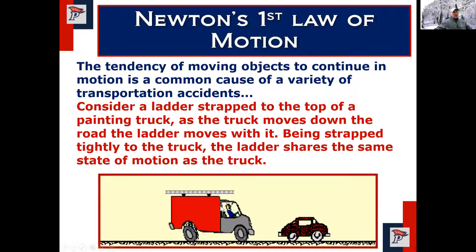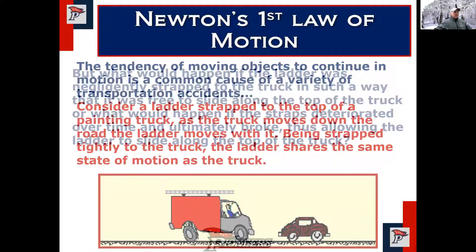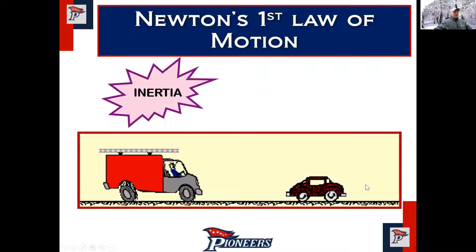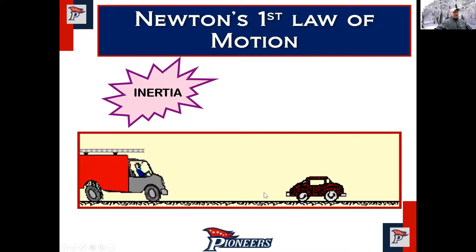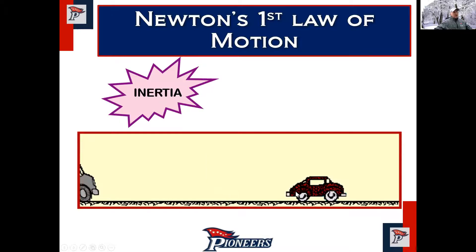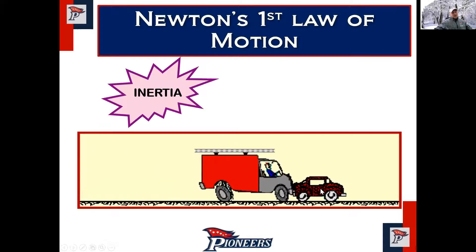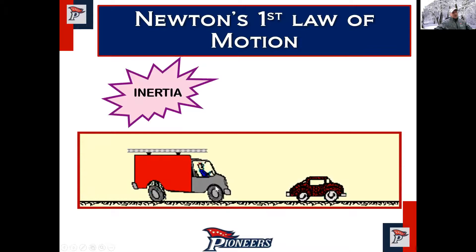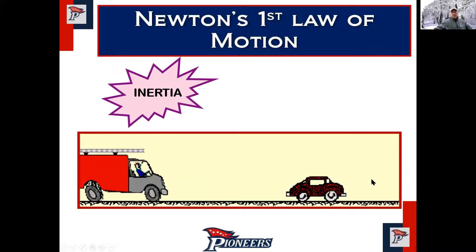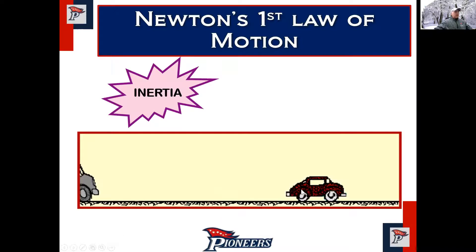Think about ladders on top of a van — if they're not secured and the van comes to a stop, the ladders go flying because they weren't tied down. They're in motion, they have inertia, they want to keep moving. You need a force to prevent that. Similarly, a stationary car that gets rear-ended: the truck exerts an unbalanced force on the car to make it move. Think about what happens to you inside that car.